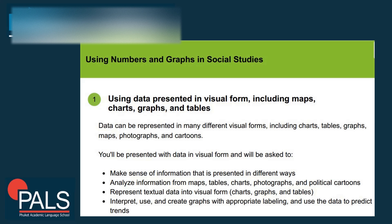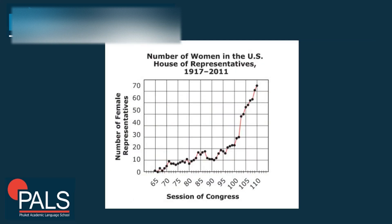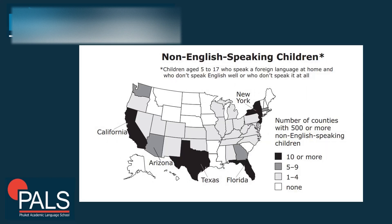The best way to read graphical information is to analyze the context before diving in. For example, looking at a chart, you would want to read the title first, and then the horizontal and vertical axes will tell you exactly what you're looking at. If you don't read the title first, it won't be clear and it could be very confusing. The same goes for maps — read the title, any text, and then look at the key carefully so that you can analyze the information within it.